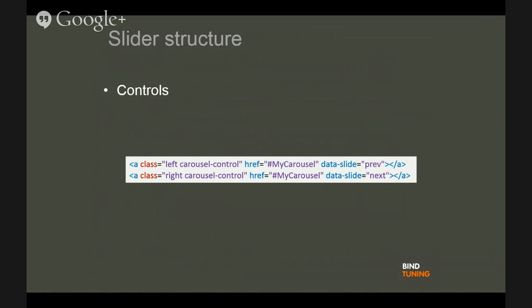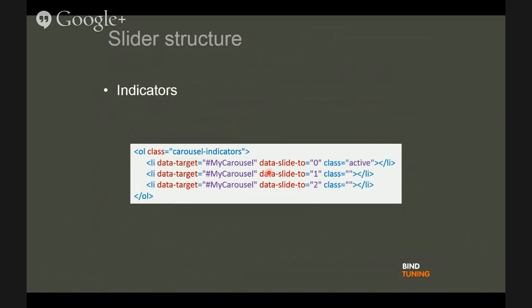The controls let you navigate in your slider between slides, and they have the reference to the slider ID — the same ID that we defined in the main wrapper div. The indicators are optional and also have a reference to the slider ID; they let you know what the active slide is and what its position is within the slider.